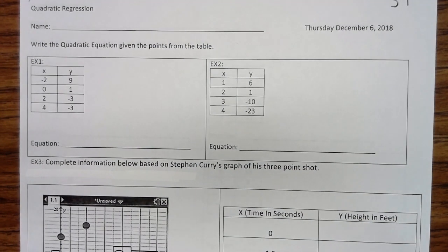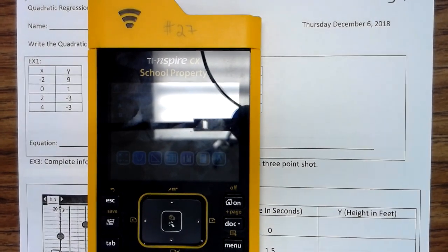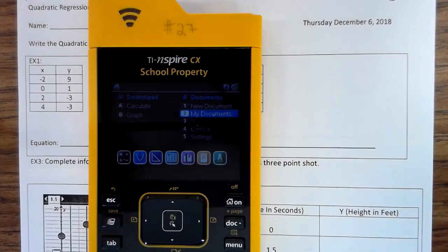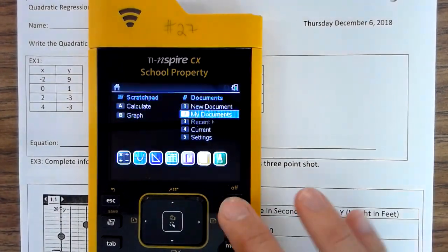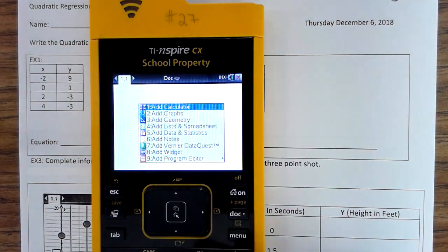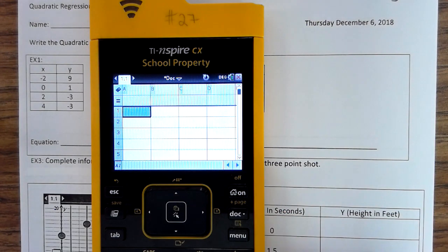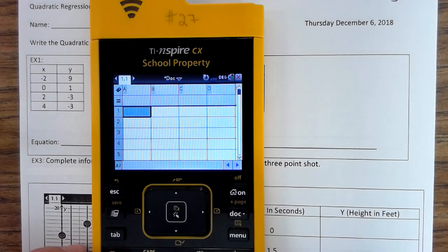Write the quadratic equation given the points from the table. So what you do is you're going to have your calculator. And there's a glare. Let's get that glare out of the way. Yay, no glare, I think. Alright, so we're going to go to On, New Document.